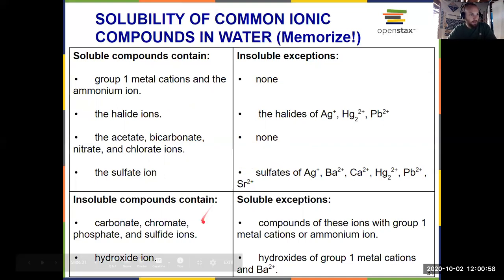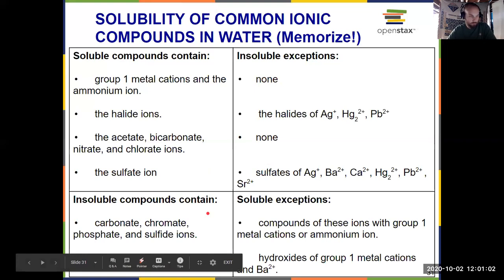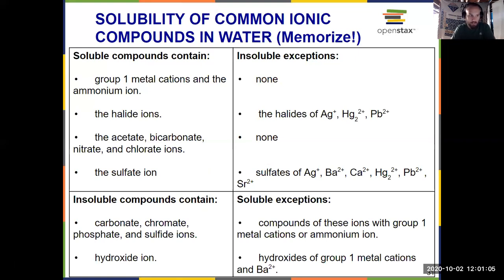Flip side of that, some things are usually almost always insoluble. So carbonate, chromate, phosphate, sulfide, and hydroxide are typically always insoluble, unless they have group one ions in them, ammonium in them. Or in the case of hydroxide, barium hydroxide, Ba(OH)2 is also soluble. So just some general guidance, things that are typically soluble, typically insoluble. That's going to get you through all the examples that we have to consider in Gen Chem 1.